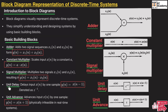Next is unit delay. As the name implies, it delays the signal by one unit. If the input sequence is x(n), the output will be y(n) = x(n-1), where the minus sign represents delay. This is represented in the block diagram as z⁻¹, which represents a unit delay. When input is given with a unit delay, output equals x(n-1).